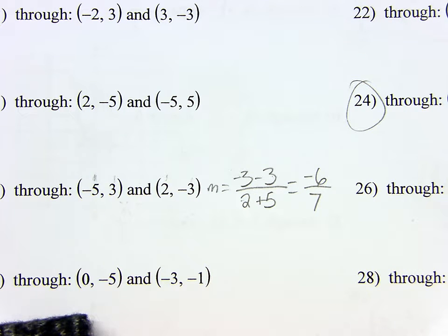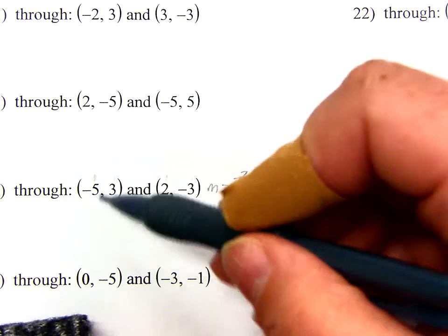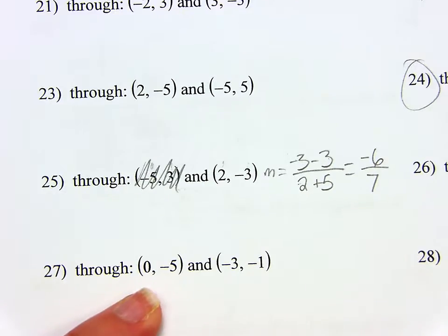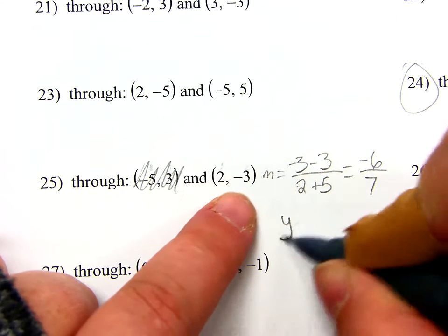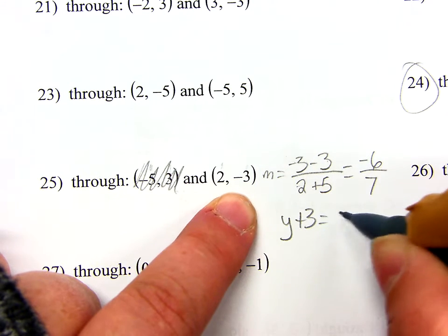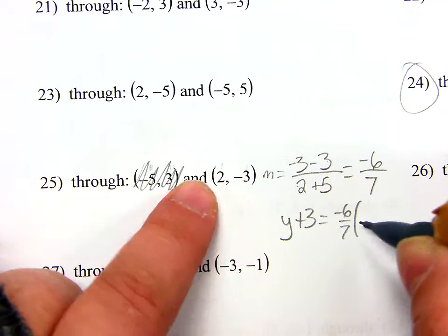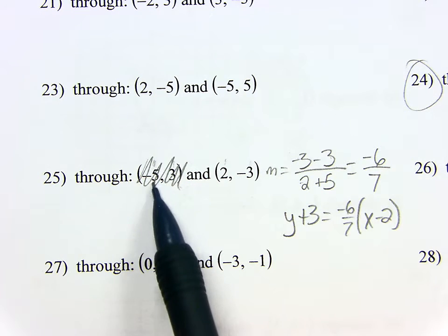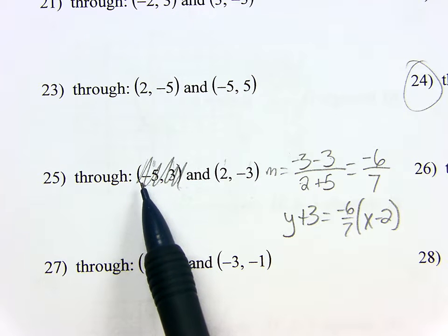I can write the equation of a line with a point and a slope. Which point do I use? Anyone you want. I'm going to pick this one just because they're smaller. So I'm going to cross this one out because I don't need it anymore, and I don't want to get confused. So, Y plus 3 equals negative 6 sevenths times X minus 2. If you pick this other point, it doesn't matter. We're all going to end up in the same spot, as long as we both did it right.